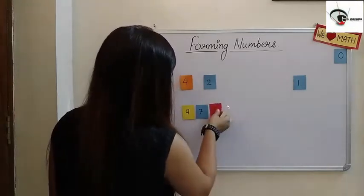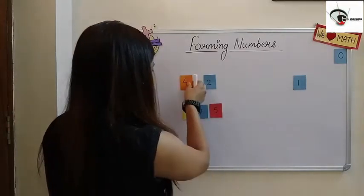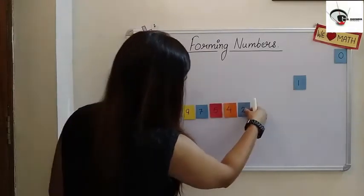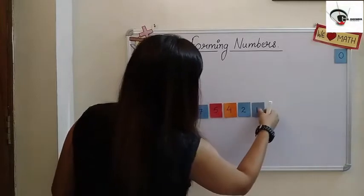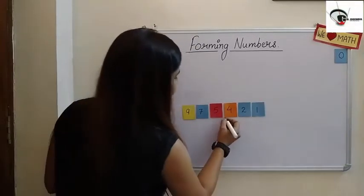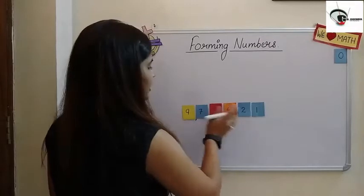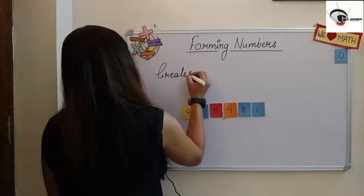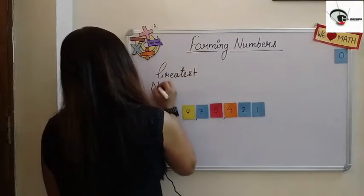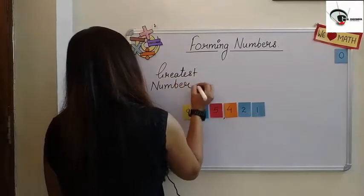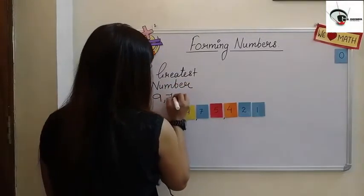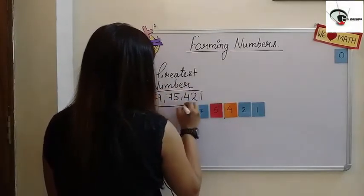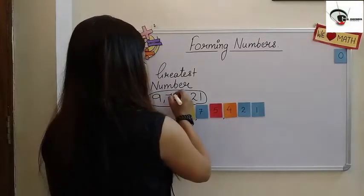The digit smaller than five is four, then two, and then one. Combining all these digits together, the greatest number is nine lakh seventy-five thousand four hundred and twenty-one. This is the greatest number formed by using these digits.